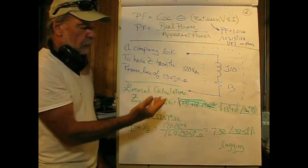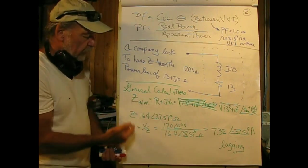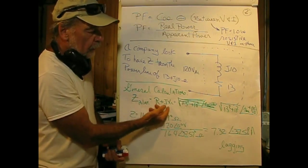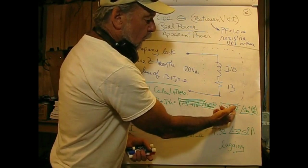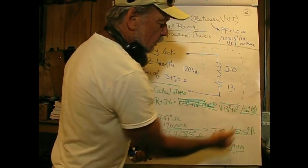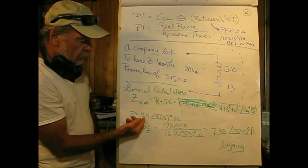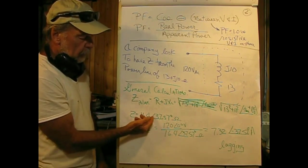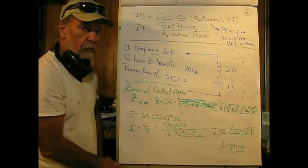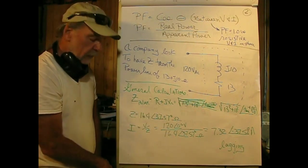We'll do some general calculations. The impedance in polar form, starting with R plus JXL, equals the square root of the sum of the squared values, inverse tangent of the imaginary over the real. That gives us an impedance of 16.4 ohms at an angle of 37.57 degrees. The positive angle tells us this is an inductive circuit.